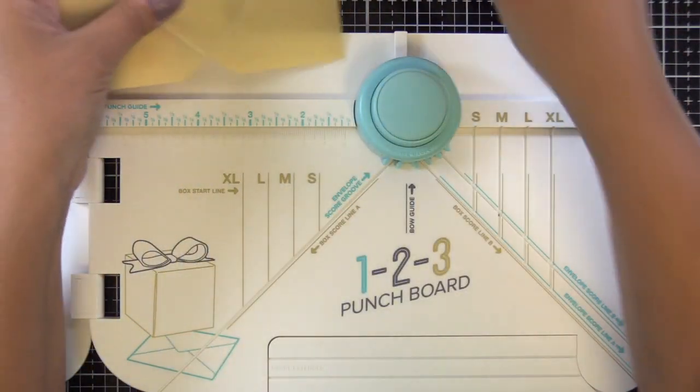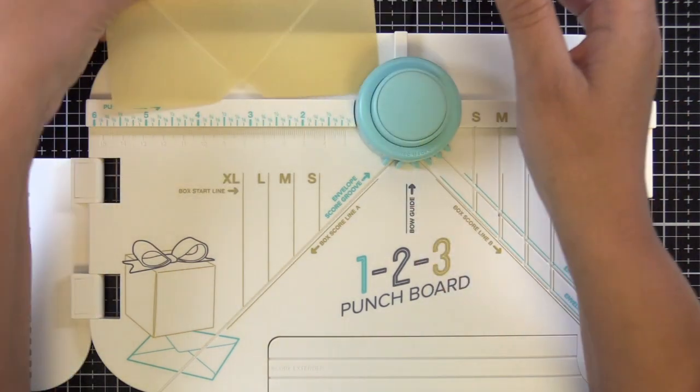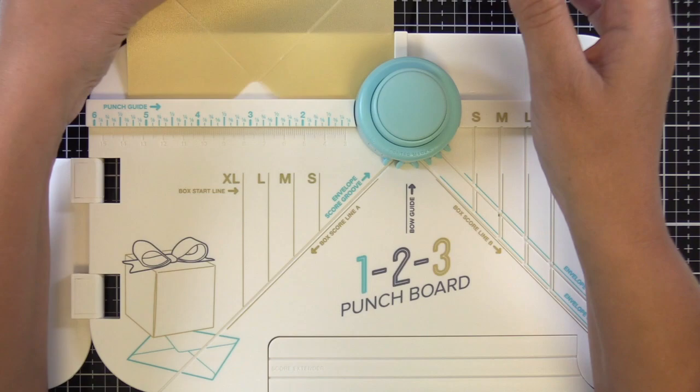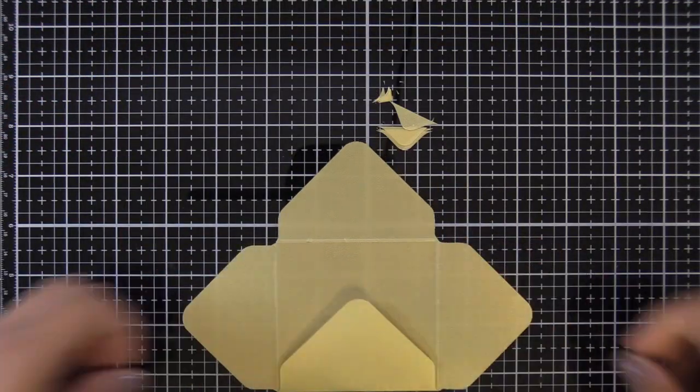So I'm just going to go ahead and round all four corners on this vellum and again this vellum is not as thick as like your heavyweight vellum so it's really easy to fold and score. So I'm just going to go ahead and fold those.